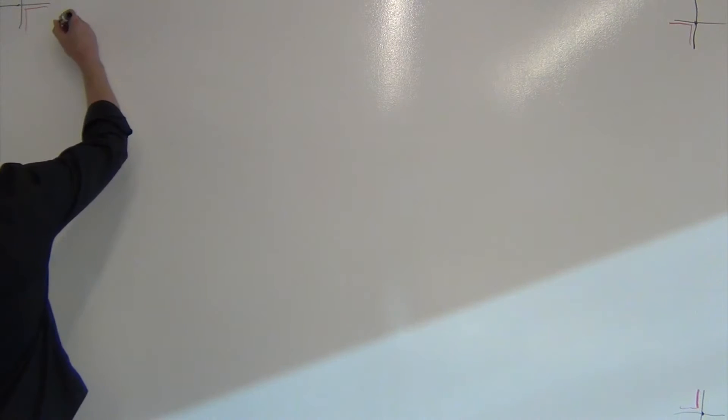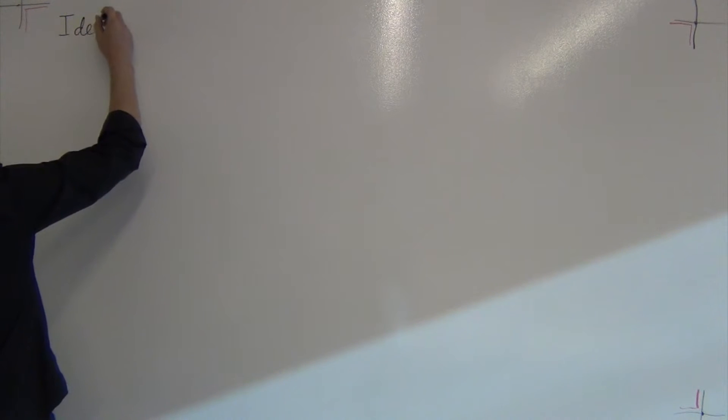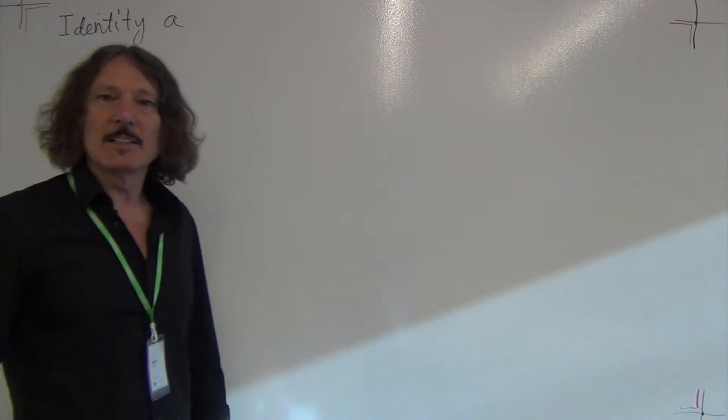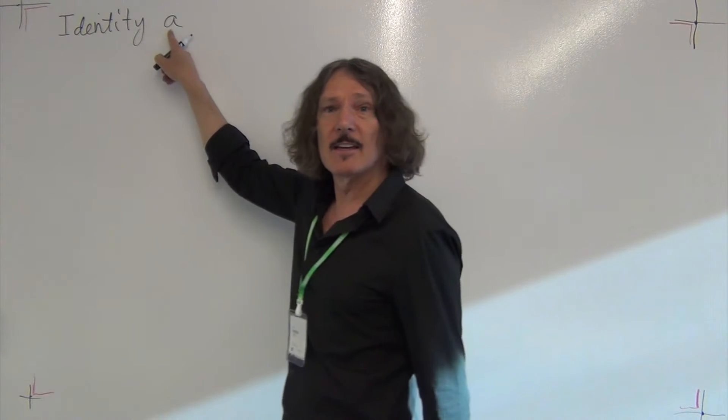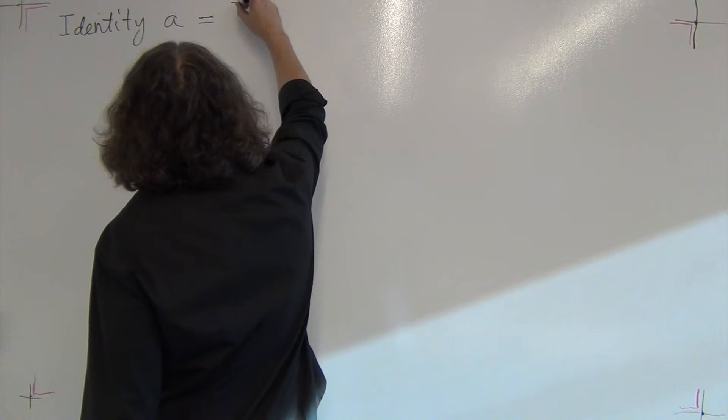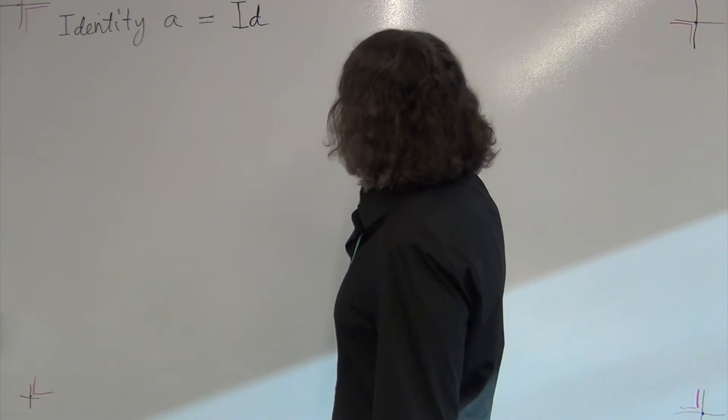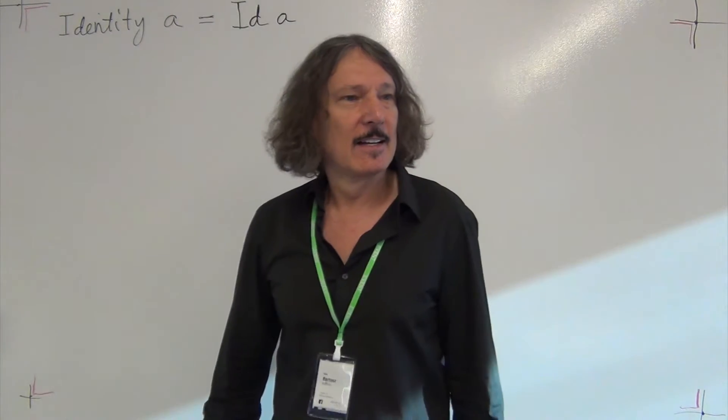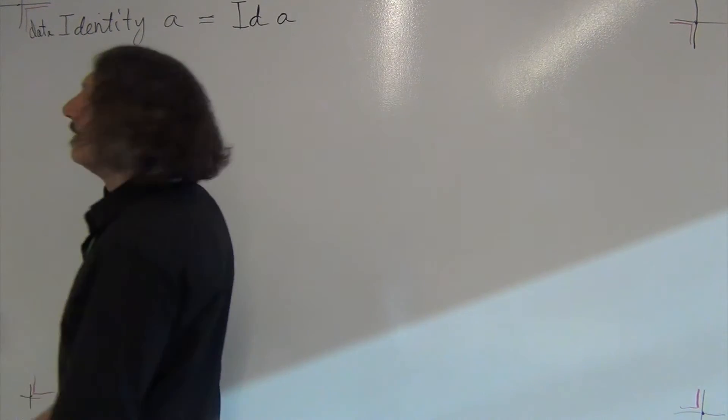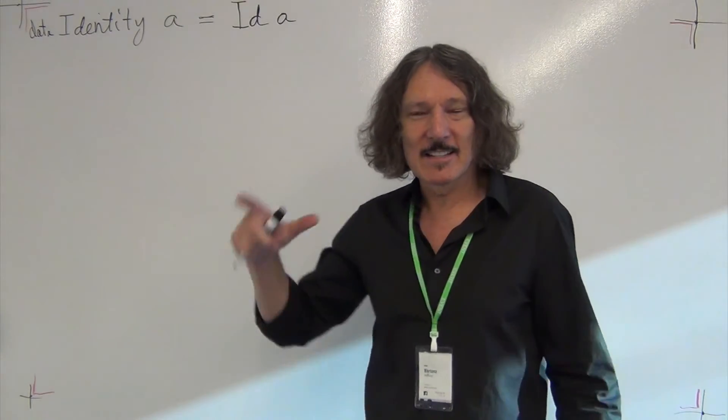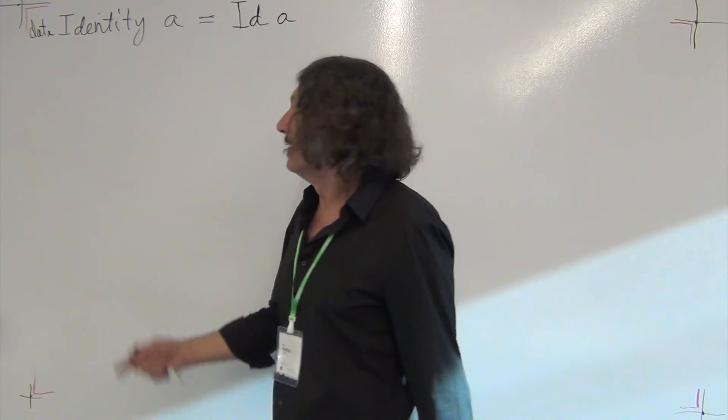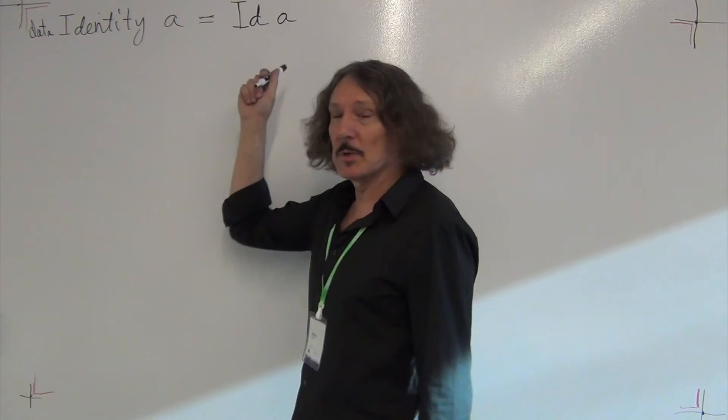So let me define the identity of some type A. Identity is a type constructor here. It takes any type A and creates a value using, let's call this constructor ID for simplicity. And this ID takes a value of type A. This is a data declaration. So this really does nothing. It just encapsulates some value of type A into this constructor and nothing else.